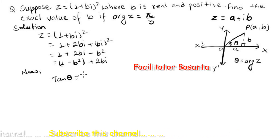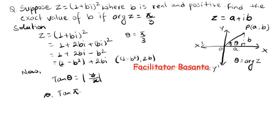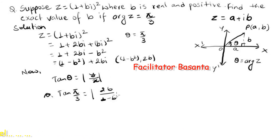Now tan(theta) is given by the modulus of the y-component divided by the x-component of the complex number. The x-coordinate is 1 minus b² and the y-coordinate is 2b. Since we are given that the argument of z equals π/3, that means theta equals π/3, so tan(π/3) equals 2b divided by (1 minus b²).